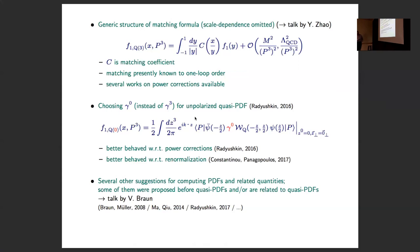For gamma plus, you have the issue that there is mixing of the operator with other more complicated operators. This is a serious issue. But for gamma 0, this is a lot simpler. I will show results for the quasi-GPDs for gamma 0.